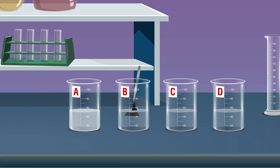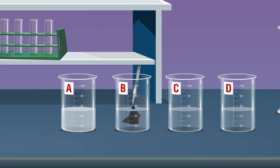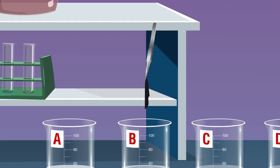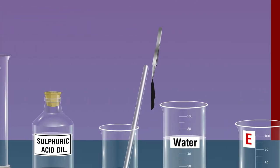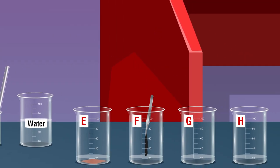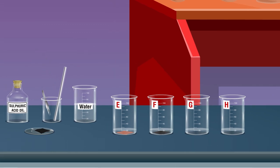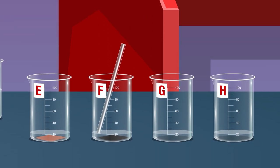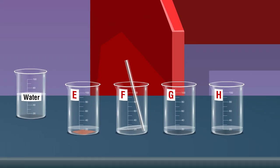Dip a small piece of black cloth in beaker B. Take out the cloth from beaker B using tweezers, pick the cloth from the beaker and dip it in dilute sulfuric acid in beaker F, and stir it gently with the help of a glass rod.